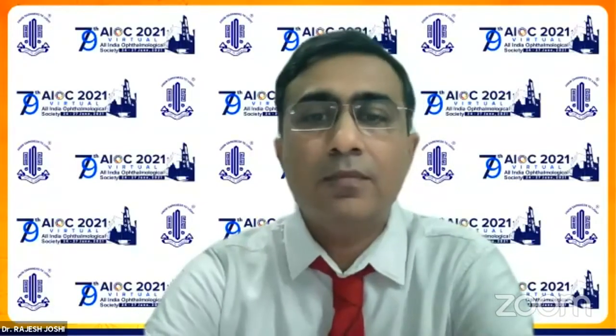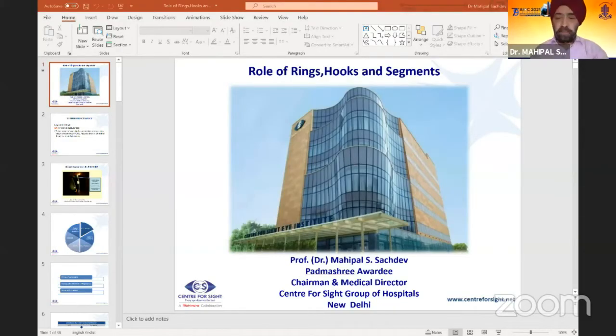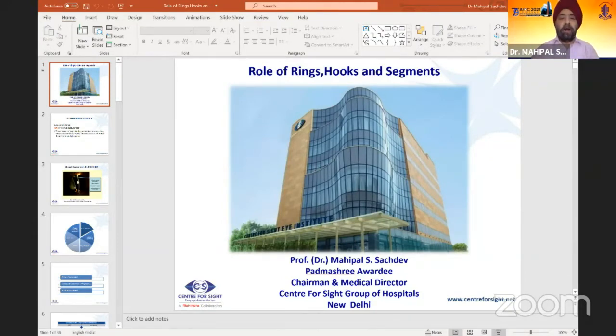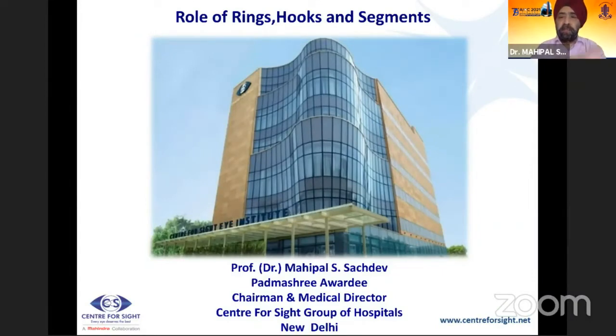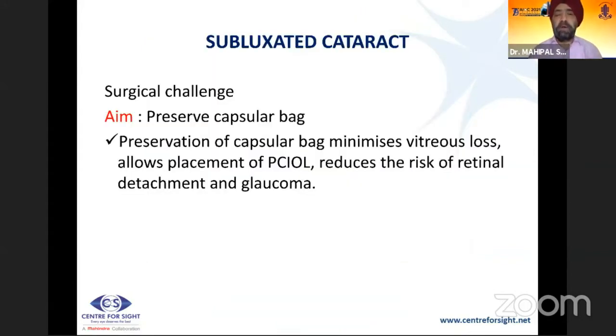Thank you, Rajesh, for excellent elaboration of all the key points of subluxated cataract management. I now invite Dr. Maipal to speak on the role of rings, hooks, and segments. Thank you, Dr. Rajiv Chaudhary. I'll be talking about the role of rings, hooks, and segments. The basic aim is to preserve the capsular bag, which minimizes vitreous loss and allows placement of a PCIOL, reduces the risk of retinal detachment and glaucoma, and keeps the lens in position.